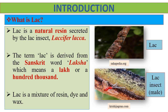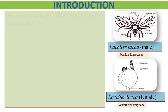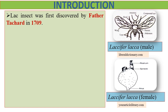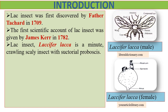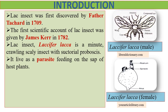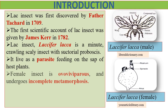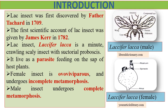Lac insect was first discovered by French missionary Father Turchard in 1709. Hence, it was earlier named as Turchardia lacquer. Later, James Kerr gave the first scientific account of lac insect in 1782, which was published in the Philosophical Transaction of Royal Society of London, and it was renamed as Lassifer leca. Lac insect is a minute, crawling, scaly insect with sectorial proboscis. It lives as a parasite, feeding on the sap of host plants. The female insect is ovoviviparous, meaning the embryos develop inside the eggs but remain in the female's body until they are ready to hatch, and it undergoes incomplete metamorphosis.